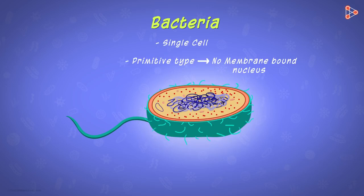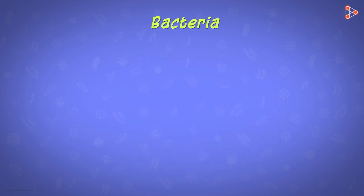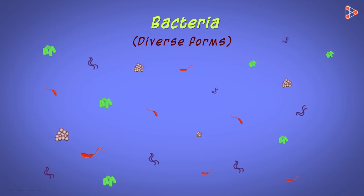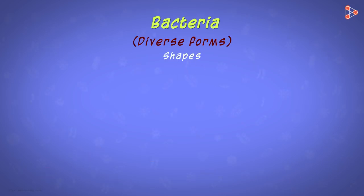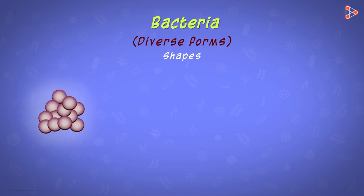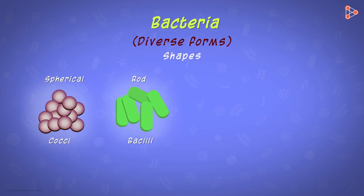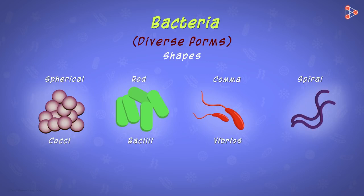Would studying them be simpler then? Not really. Bacteria, in spite of their unicellular and prokaryotic nature, come in diverse forms — various shapes and sizes — and are present almost everywhere around us. We classify them into four major groups based on shapes: the spherical ones called coccus (plural cocci), the rod-shaped ones called bacillus (plural bacilli), the comma-shaped bacteria called vibrio (plural vibrios), and the spiral-shaped ones called spirillum (plural spirilla).